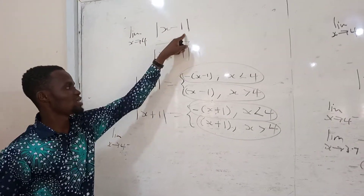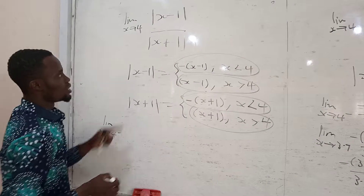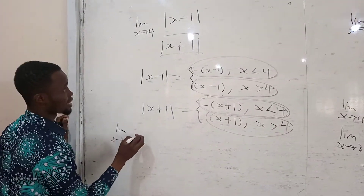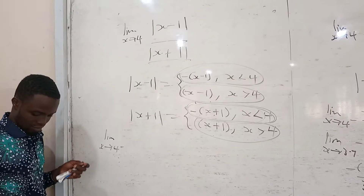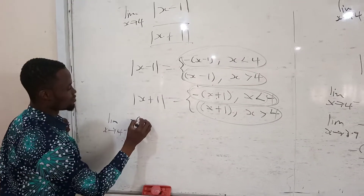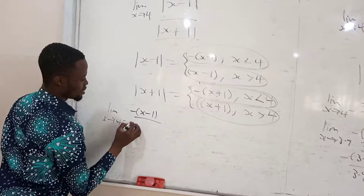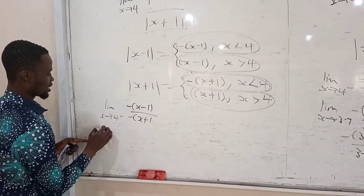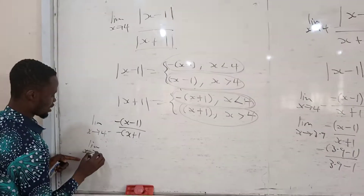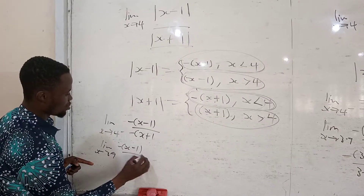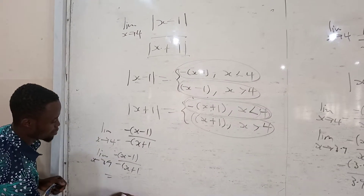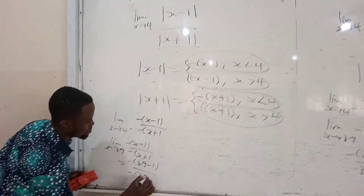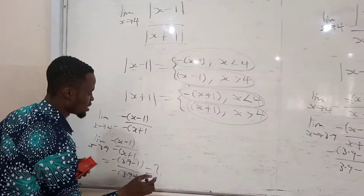For the left-hand side, in place of the numerator I substitute negative(x minus one), and for the denominator I substitute negative(x plus one). So I get the limit as x goes to four minus of negative(x minus one) all divided by negative(x plus one). I choose a number less than four, that is 3.9. Substituting 3.9: negative(3.9 minus 1) all divided by negative(3.9 plus 1), and I keep that answer.